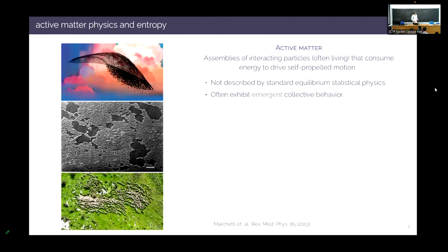Here are three examples: in the top left, a starling murmuration — flocks of birds exhibiting remarkable pattern formation. In the middle, a biofilm of E. coli bacteria showing spontaneous emergence of a highly non-uniform density from an initially uniform one, only possible because the E. coli are active and can self-propel. At the bottom, a drone image of a herd of sheep migrating across a plane — in video they flow like a fluid and exhibit remarkable polar ordering. There's universal behavior across scales, all brought about by the fact that individual constituents are active.